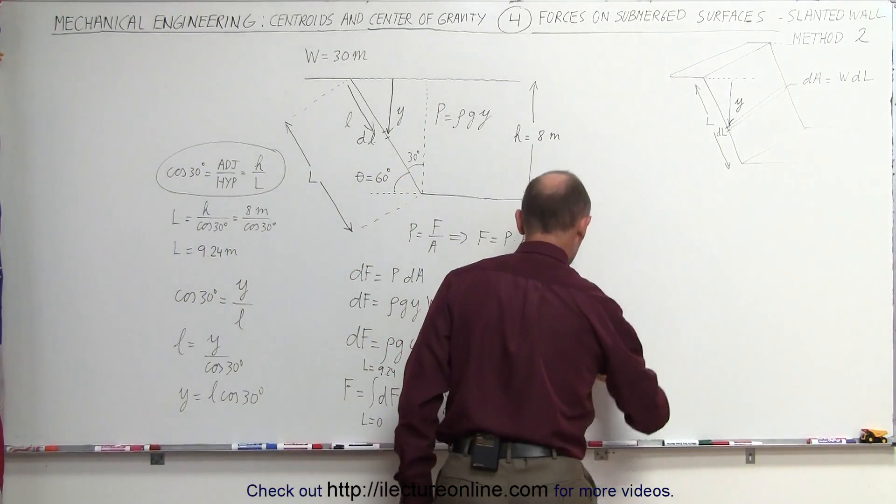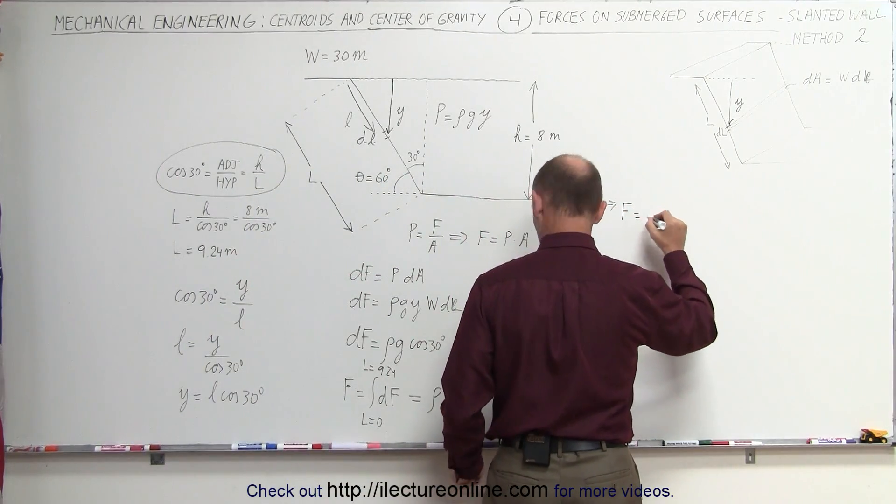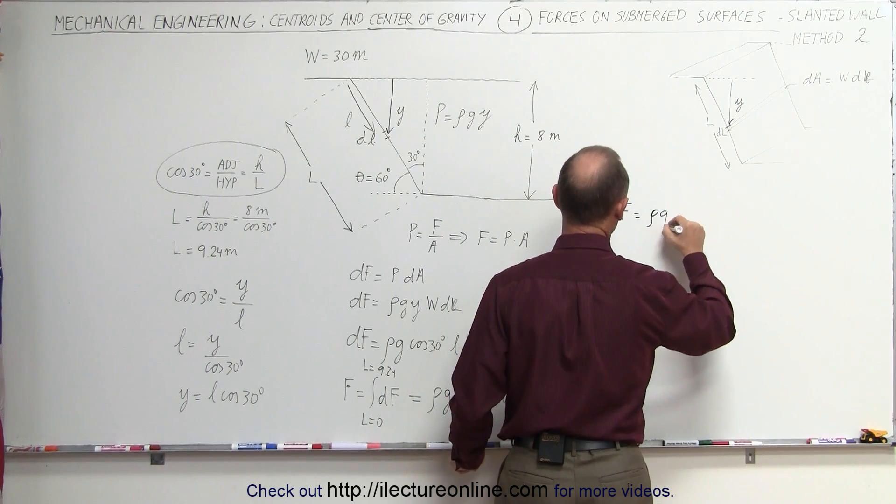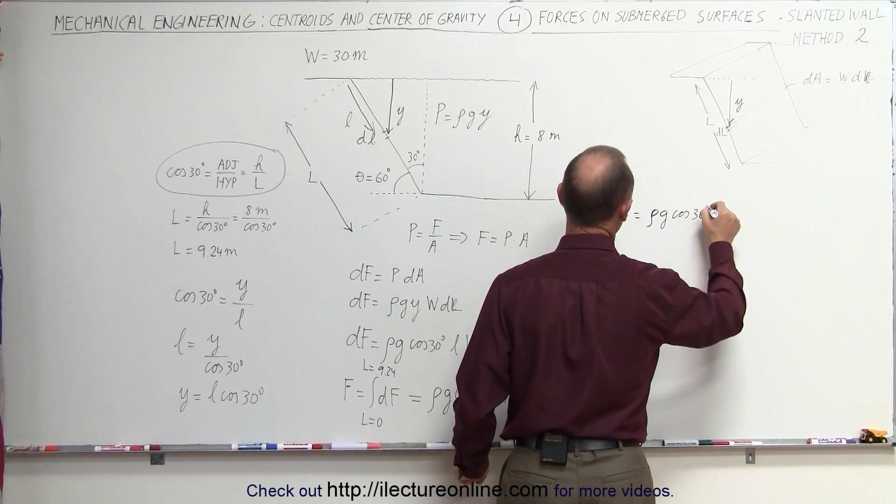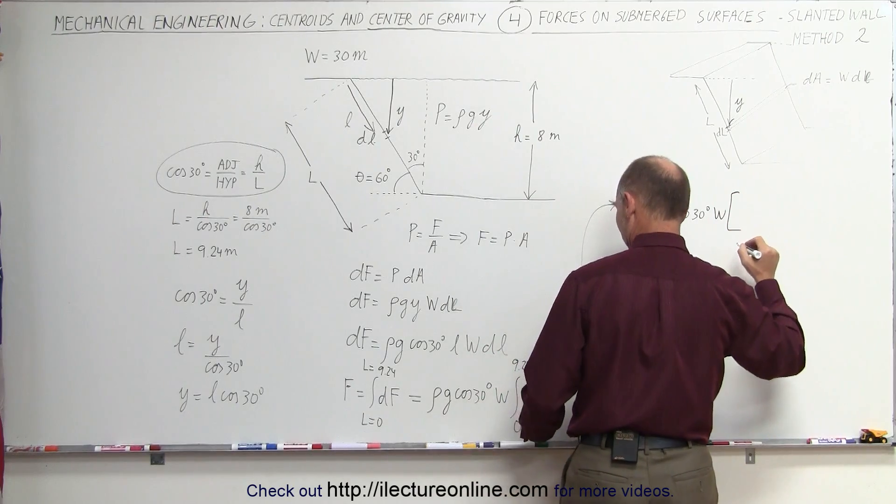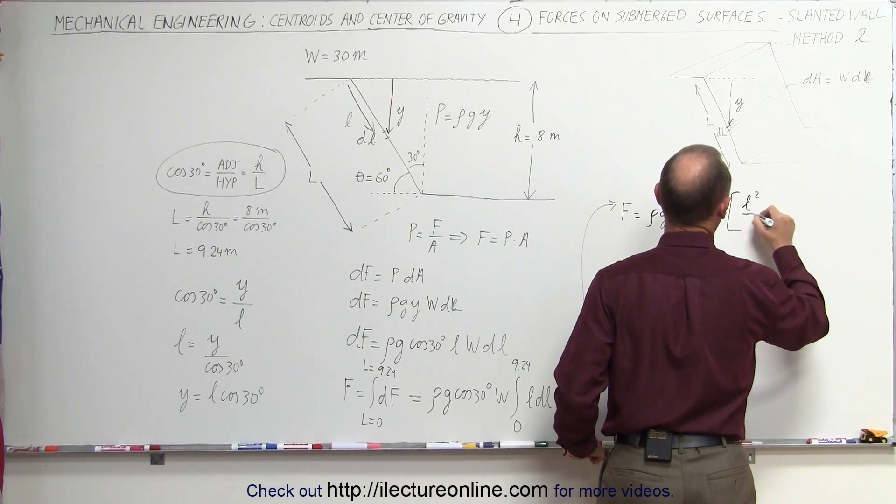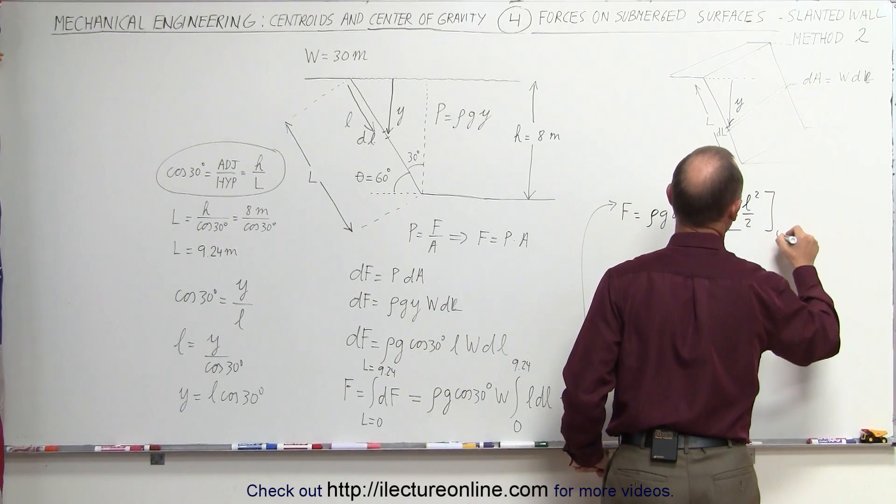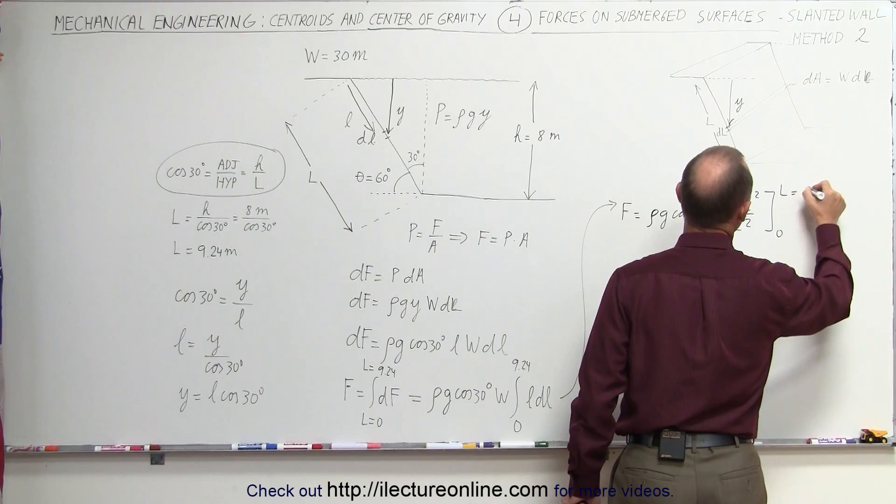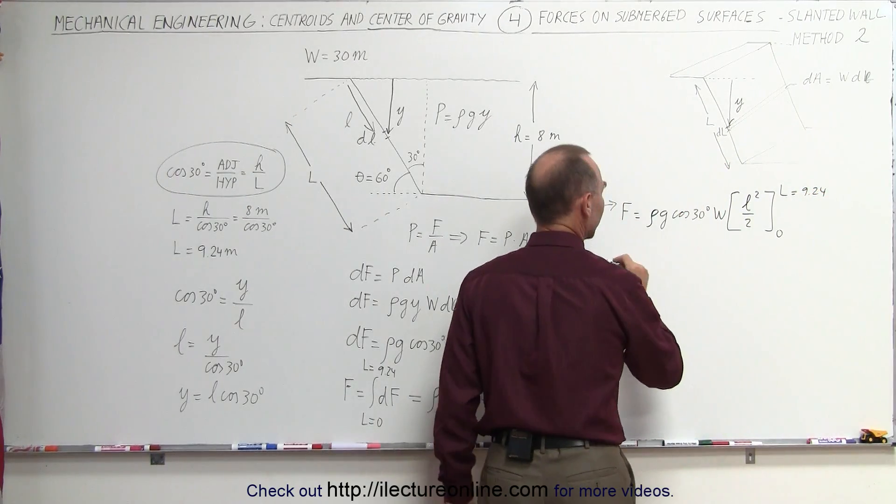Let's come up here for a little bit more room. The force is equal to rho g times the cosine of 30 degrees times w times, if we integrate ldl, we get l squared divided by 2, and we're going to integrate that from 0 to l, l being 9.24 meters. So finally, we can say that f is equal to, plug it in the upper limit, and find the value for all these.